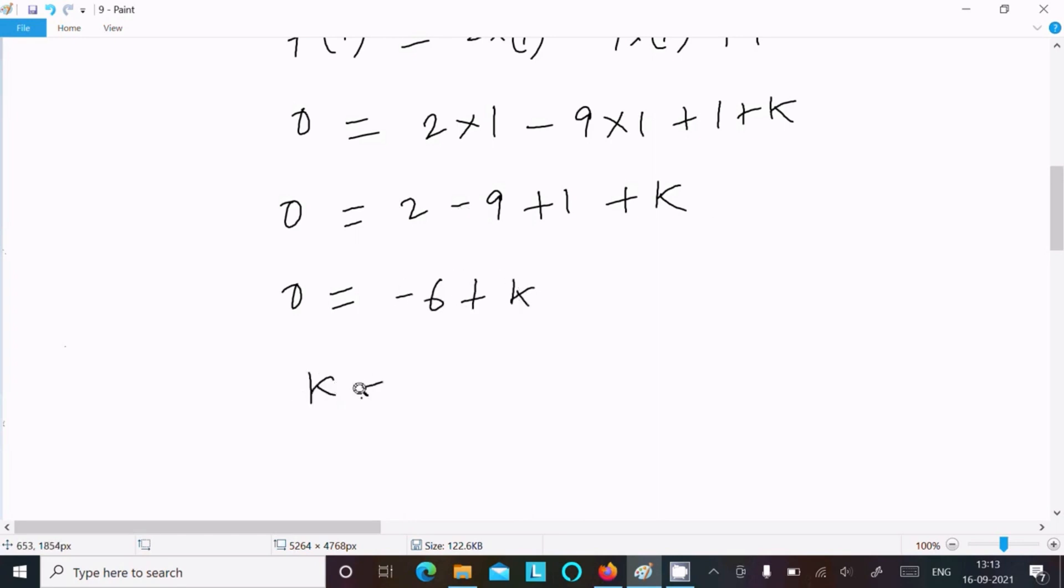Now this here 2 plus 1 or 3, 3 minus 9 that is minus 6 plus k, or k equal to 6 moving on the left, so 6. So here k equal to 6 is the answer.